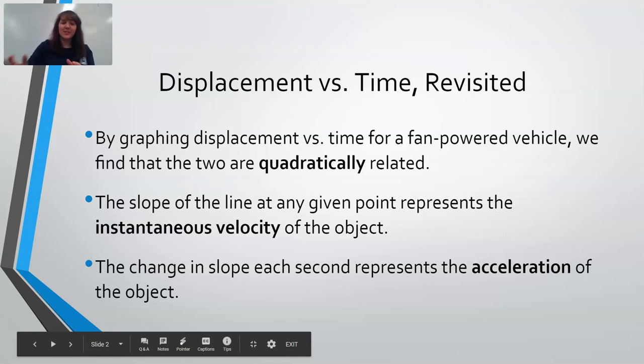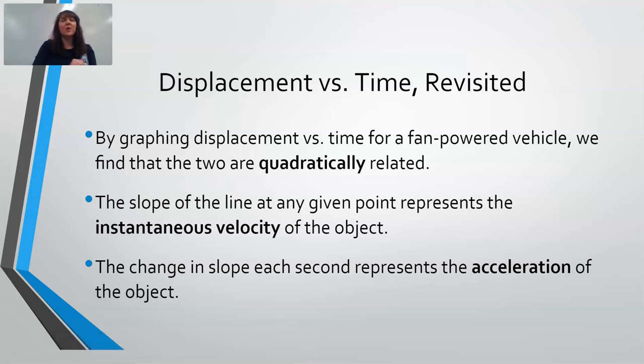Just to re-establish where we were at the end of last class, we were looking at relationships between displacement and time for an accelerating object. And we found that when we graphed those two against each other, there was a quadratic relationship that displacement varies with time squared. And then the slope of that line gives us the instantaneous velocity of the object.